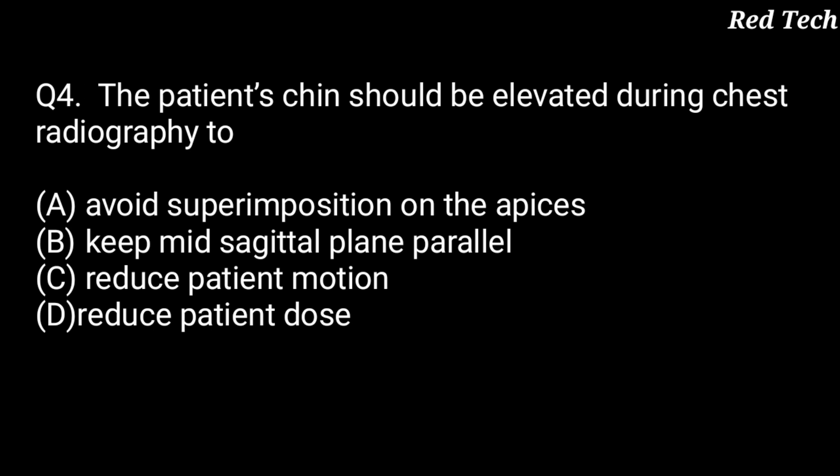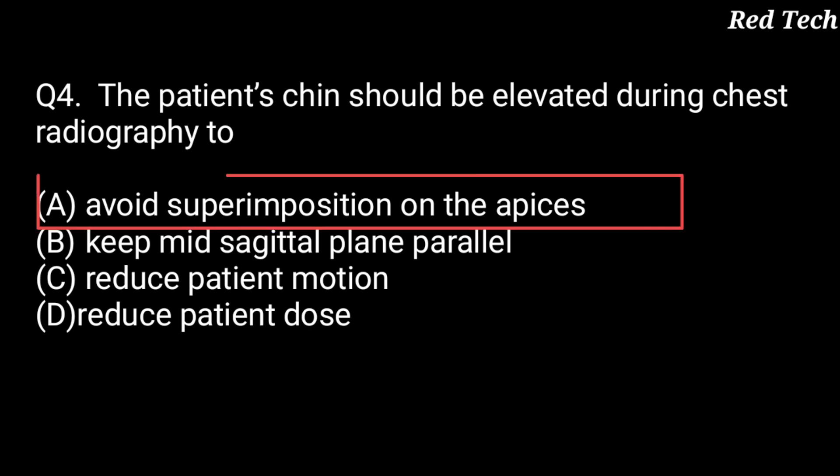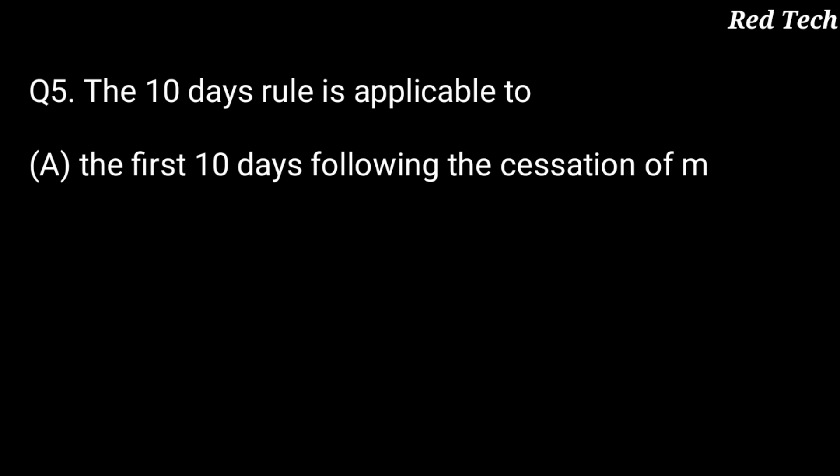Question number 4: the patient's chin should be elevated during chest radiograph — why? Option A is avoid superimposition on the apices, option B is keep mid-sagittal plane parallel, option C is reduce patient motion, and option D is reduce patient dose. The right answer is option A — to avoid superimposition on the apices, so the chin does not overlap on the image. That is why we elevate the chin upward.